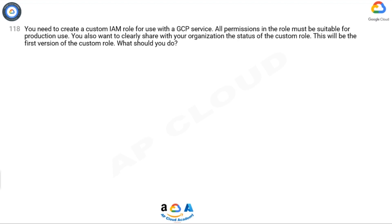Question 118. You need to create a custom IAM role for use with a GCP service. All permissions in the role must be suitable for production use. You also want to clearly share with your organization the status of the custom role. This will be the first version of the custom role. What should you do?